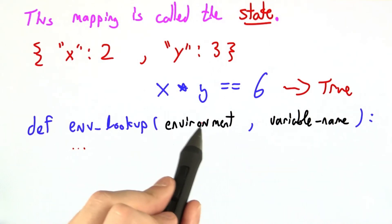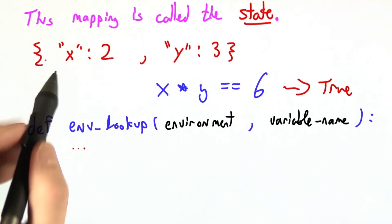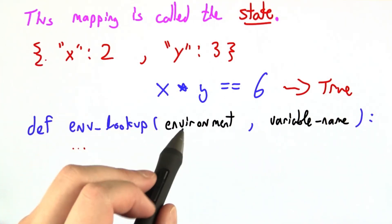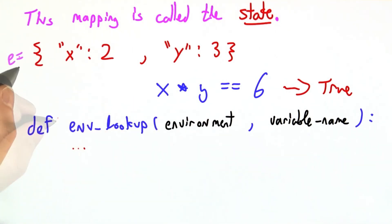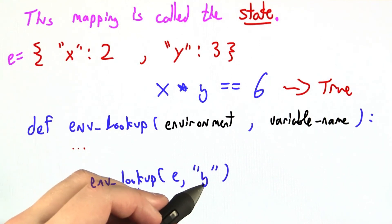where you pass in an environment, probably a dictionary, but we may make it more complicated later, and a variable name, and you get the answer out. So if this is our environment e, calling env lookup of this environment e and asking for the variable y gives us back the value 3.